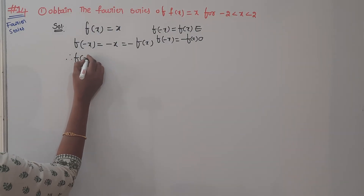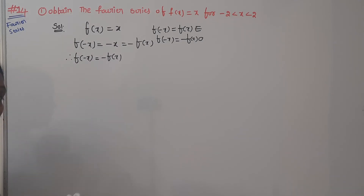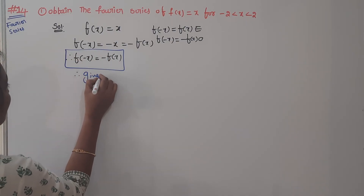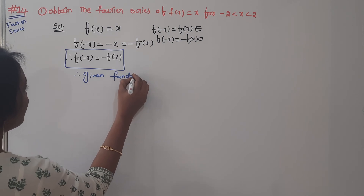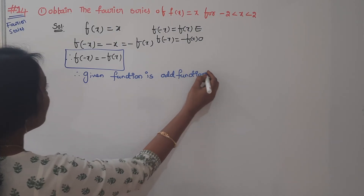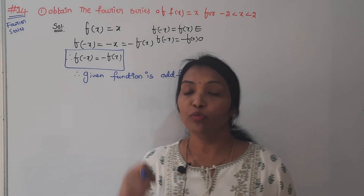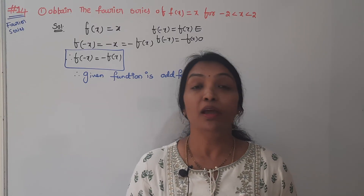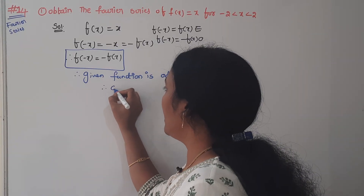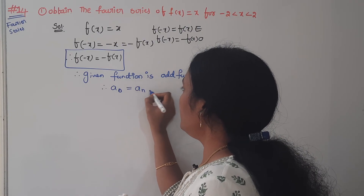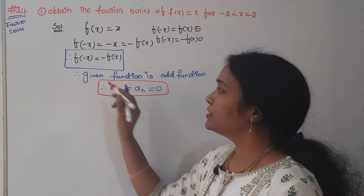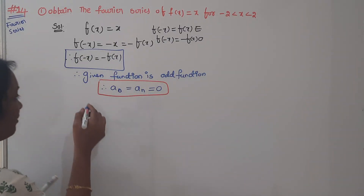F of minus x is equal to minus of f of x — that is the condition for an odd function. If the function is an odd function on the interval minus L to L, then a0 and an are both zero. Only we have to calculate bn.